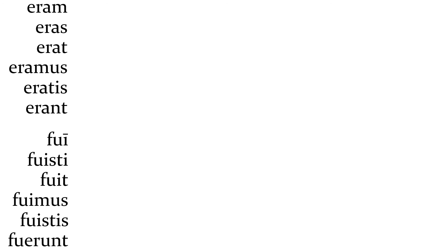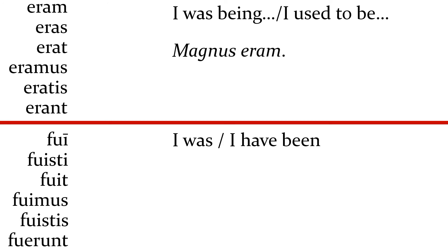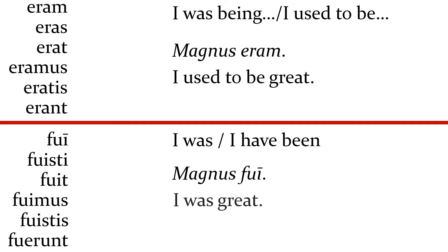You might be wondering about 'eram,' because 'eram' is 'sum' in the imperfect. The difference is: 'eram' is basically I was being or I used to be, where 'fui' is I was or I have been. For now we'll be able to use them both as 'I was' and know from context if anything else works. If I say 'magnus eram,' that means I used to be great; 'magnus fui' means I was great — as in, like, that one time I was great in that play.